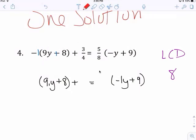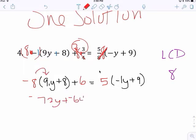All the other ones we multiply by 8. 1 times negative 8. 8 times negative 1 is negative 8. Cross cancel here. 2, 2 times 3 is 6. Cross cancel here. It's 1. 1 times 5 is 5. Then, distribute negative 72y plus negative 64. Add 6 equals to negative 5y. Distribute plus 45.